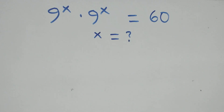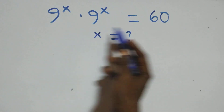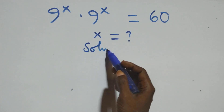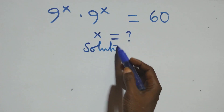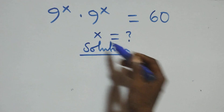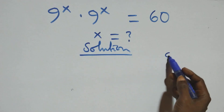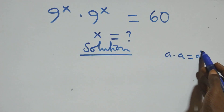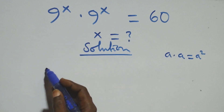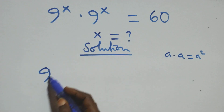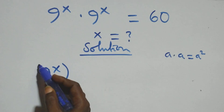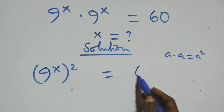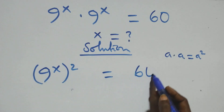Hello, you are welcome. How to solve this nice exponential equation. When we have a times a, this is the same thing as a squared. Multiplying, we can write it as 9 raised to power x squared equals to 60 on this side.